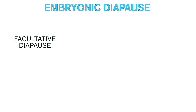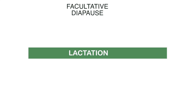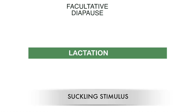Embryonic diapause has two types: one is facultative diapause and the other is obligate diapause. In facultative diapause, lactation is the cue or signal for diapause — specifically, the secretion of milk from mammary glands to feed the young ones. The suckling stimulus causes the embryo to enter into diapause. Like in marsupials — the kangaroo — the joey needs much care and attention, and it takes up to 35 days for a joey to come out of the pouch.